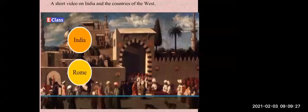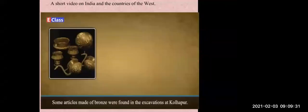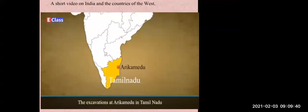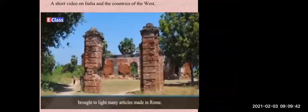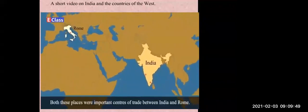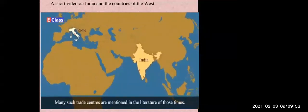Around the first or second century CE, trade between India and Rome flourished, and the ports in South India also had a large share in this. Some articles made of bronze were found in excavations at Kolhapur — they had been made in Rome. The excavations at Arikamedu in Tamil Nadu have also brought to light many articles made in Rome. Both these places were important centers of trade between India and Rome, and many such trade centers are mentioned in the literature of those times.